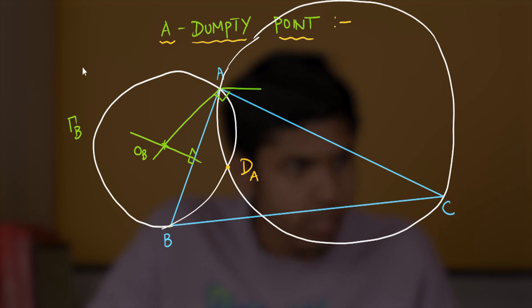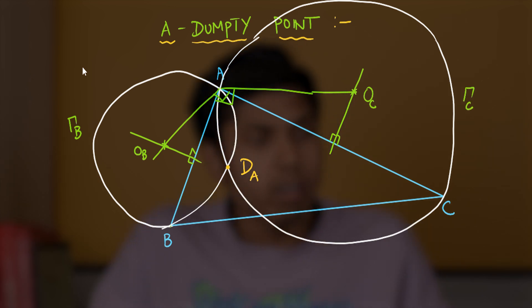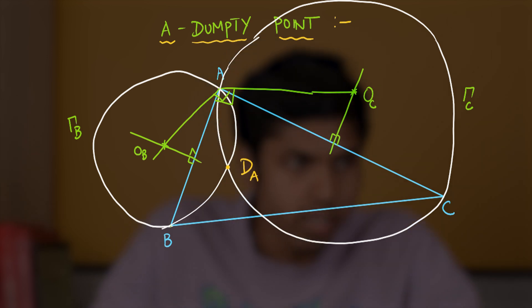And, also, construct the line perpendicular to AB at A and the perpendicular bisector of AC to intersect at the center of gamma-C, say, O_C. Now, we just construct the circle with center O_B and O_C and radius O_B A and O_C A to arrive at gamma-B and gamma-C. And, therefore, these circles are unique.